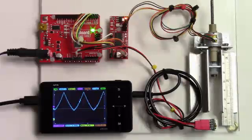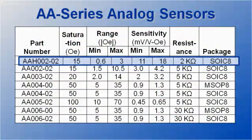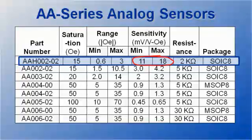Now let's take a look at a high sensitivity sensor. This is an AAH002, which has a nominal sensitivity of 15 millivolt per volt per Ørsted, or about 15 times more sensitive than the AA004 we tested before.